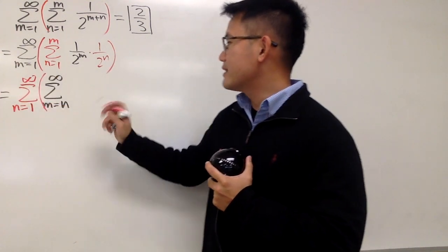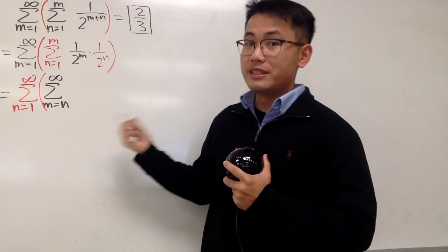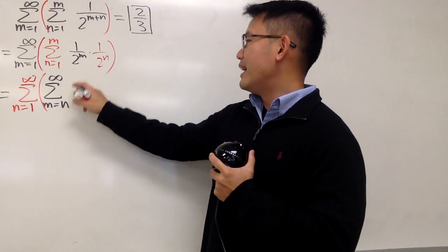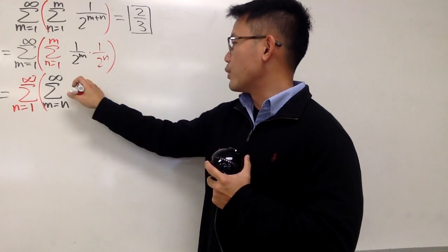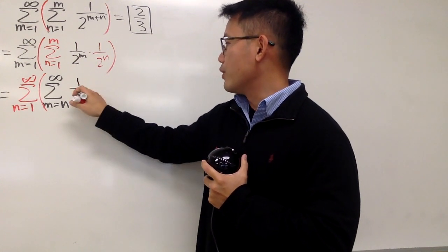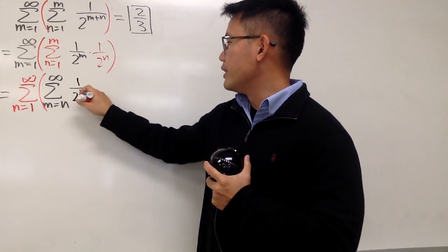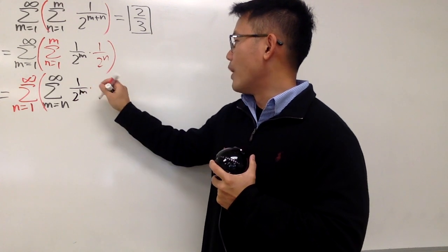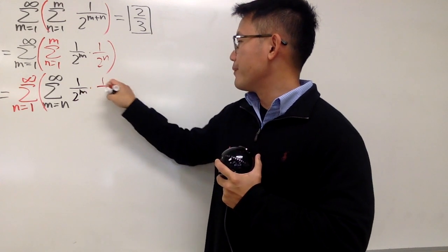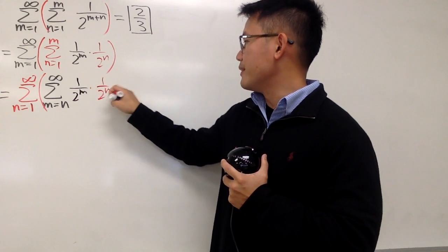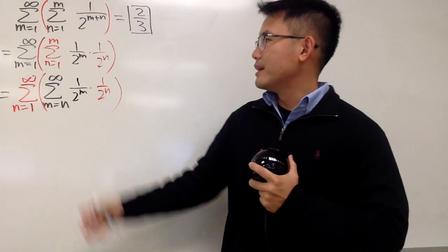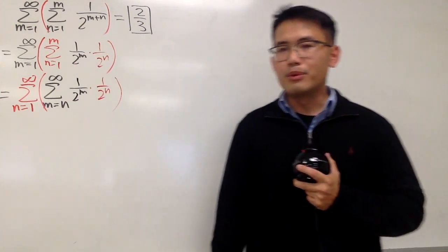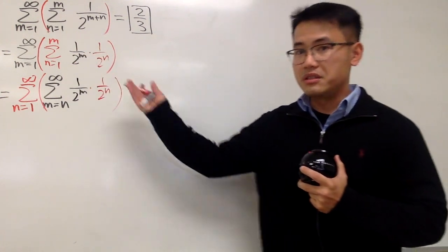Now we can work this inside out again. The expression stays the same: 1 over 2 to the m times 1 over 2 to the n. This is how you change the order of a double summation in this situation.